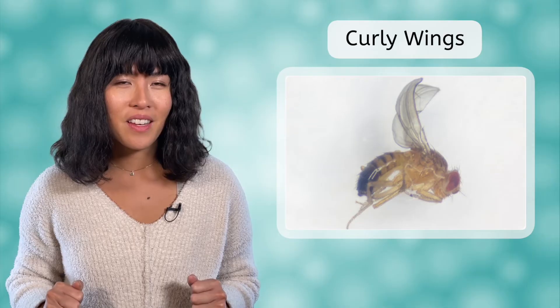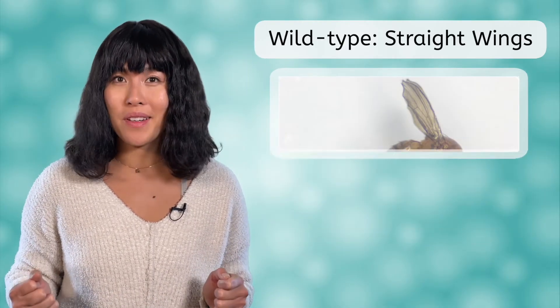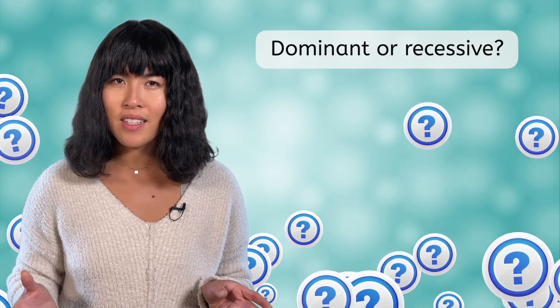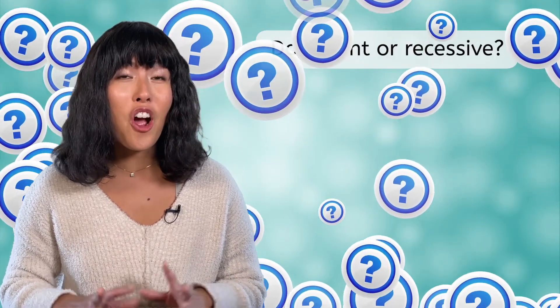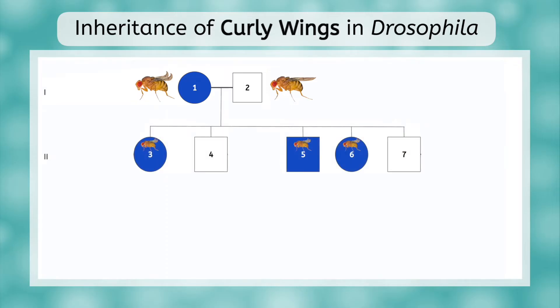For our first pedigree, we will look at the trait of curly wings in Drosophila. The wild type trait is straight wings, but some fruit flies are born with a mutation that causes their wings to curl backwards. This mutation was first studied in 1923 by Lenore Ward and is now known to be caused by a deletion mutation, meaning a nucleotide base is lost. We start with two parent fruit flies — a mom with curly wings and a dad with wild type straight wings. They have five offspring: three had curly wings, and two had straight wings like dad.